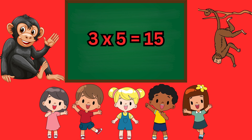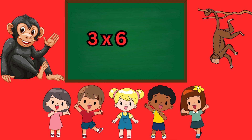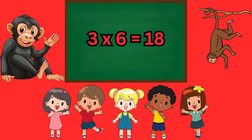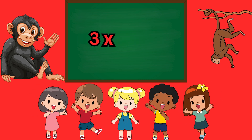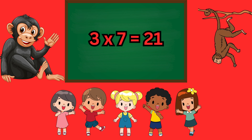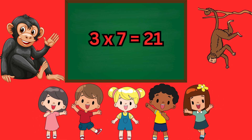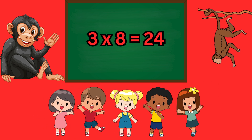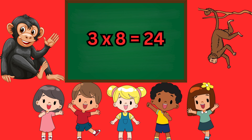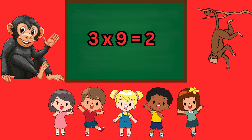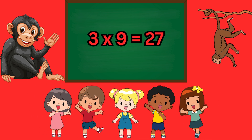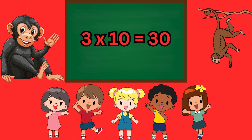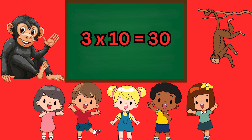Three six's a eighteen, three seven's a twenty-one, three eight's a twenty-four, three nine's a twenty-seven, three ten's a thirty.